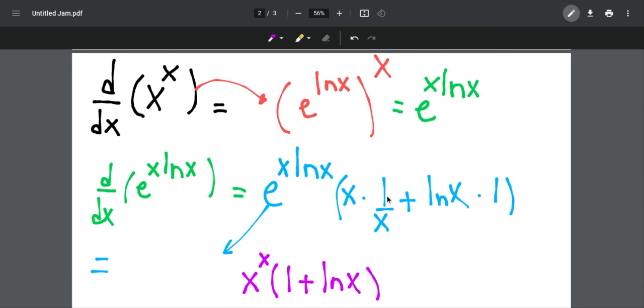x times 1 over x is just 1. ln x times 1 is ln x.